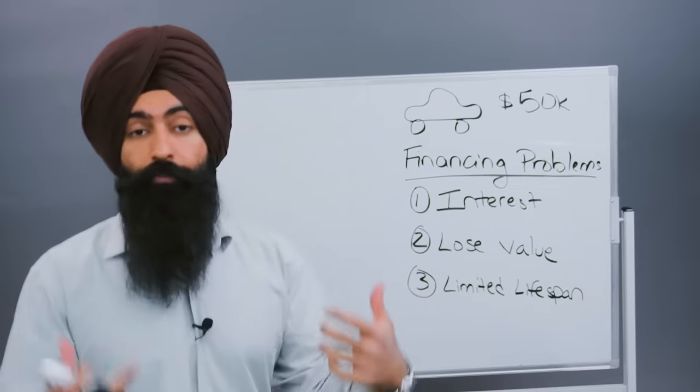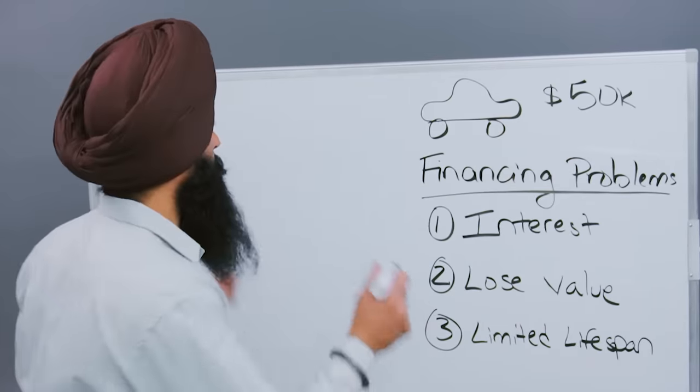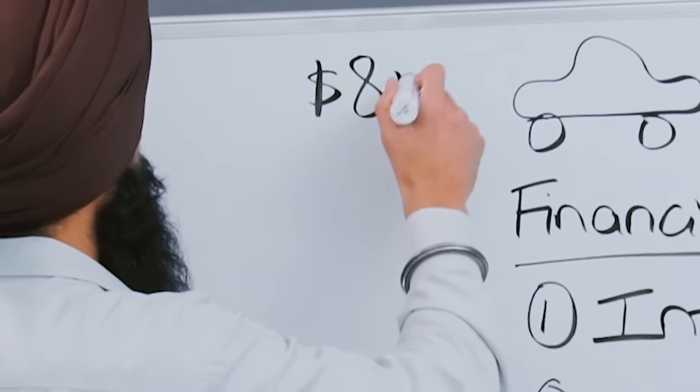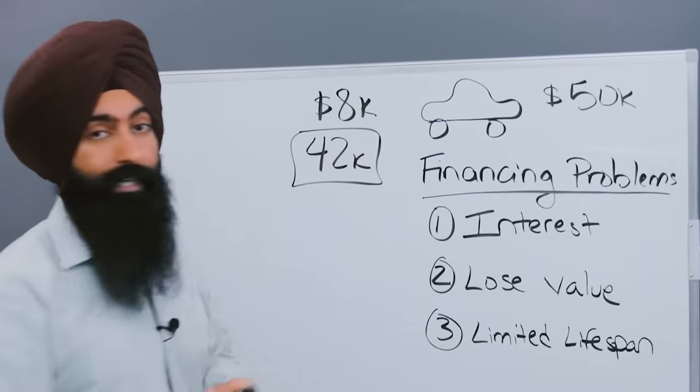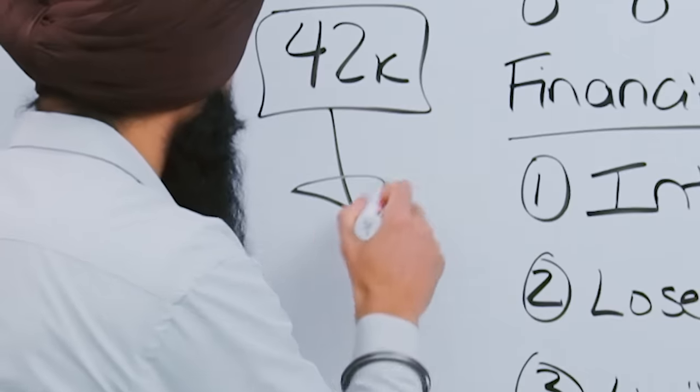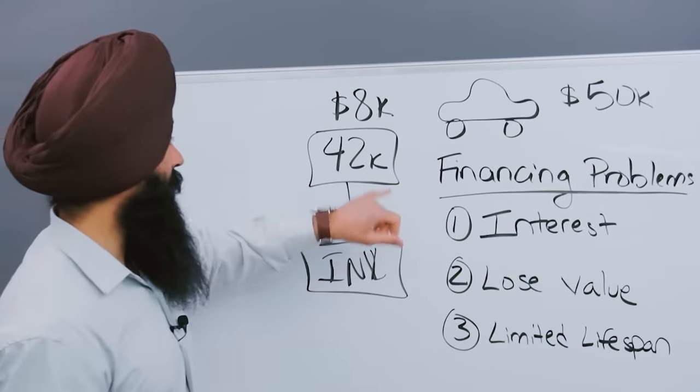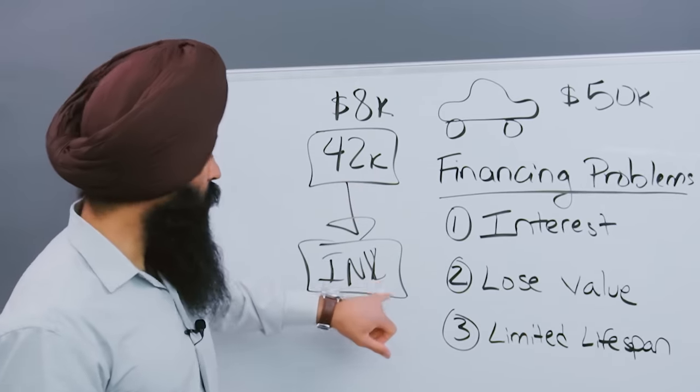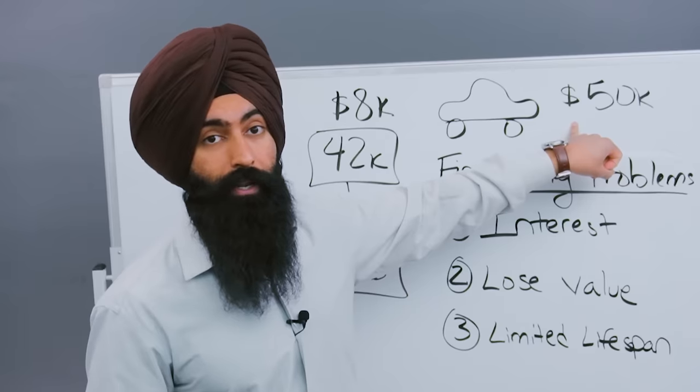Now, the argument for financing a car is, hey, you want to buy this $50,000 car, you can put $8,000 down, keep the $42,000 in your pocket. Now you can take this $42,000 and invest it somewhere. So that way, now you can get some money from this money you kept in the bank. And now hopefully your investments can outperform the interest rate that you're paying on this car.